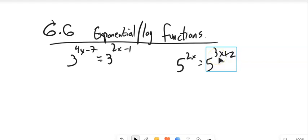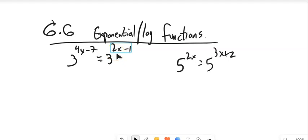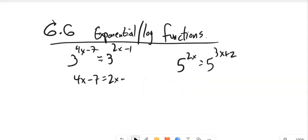One thing that's convenient: when I have the same base, I can actually just set the exponents equal to each other. Hopefully that makes sense — 3 to some power equals 3 to some power means those powers must be equal. So from there, it's just a little bit of algebra to solve it out.